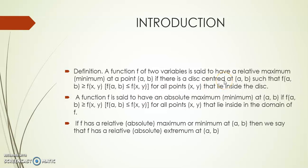Let's start with the introduction definition. A function f of two variables is said to have a relative maximum or minimum at a point (a, b) if there is a disk centered at (a, b) such that f(a,b) is greater than f(x,y) for relative maximum, and f(a,b) is less than or equal to f(x,y) for relative minimum, for all points (x,y) that lie inside the disk.